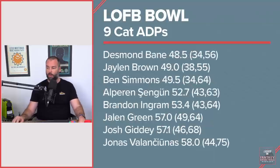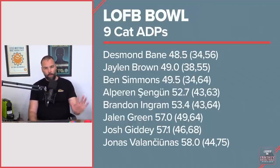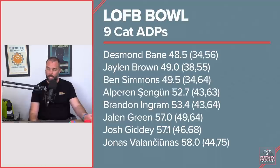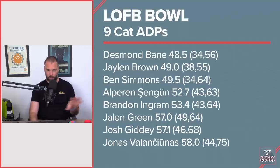Desmond Bain at 48.5 ADP with a highest of 34 and a lowest of 56. I've been all over the map with Bain because I was worried about Brooks and the shot attempts in preseason. It's all gone to Bain and Brooks is actually taking a step back. Whether that lasts into the regular season I don't know, but Bain might be a third round player. I'm looking at him as a fourth round guy, maybe third.